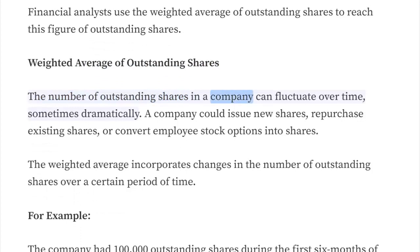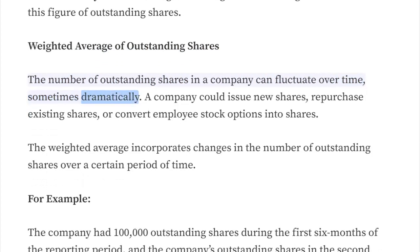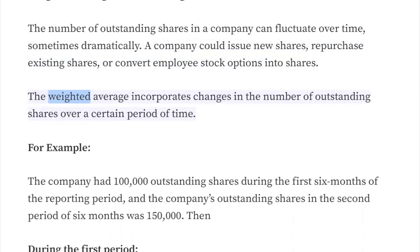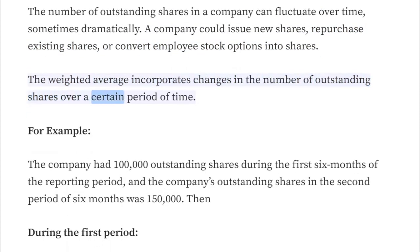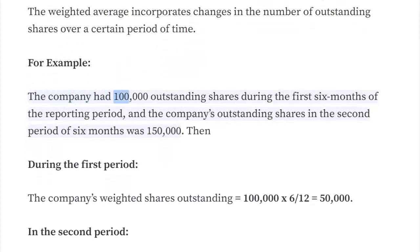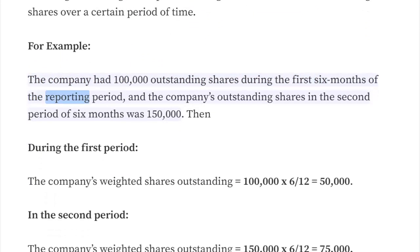The weighted average of outstanding shares accounts for the fact that the number of outstanding shares in a company can fluctuate over time, sometimes dramatically. A company could issue new shares, repurchase existing shares, or convert employee stock options into shares. The weighted average incorporates changes in the number of outstanding shares over a certain period of time.